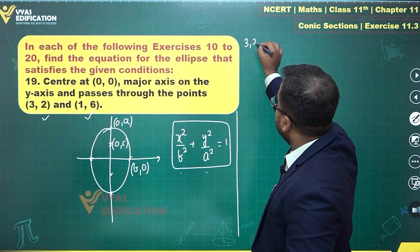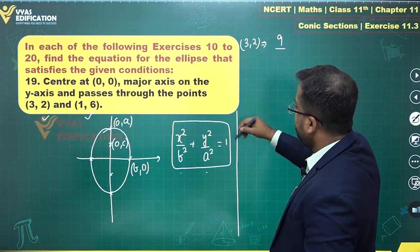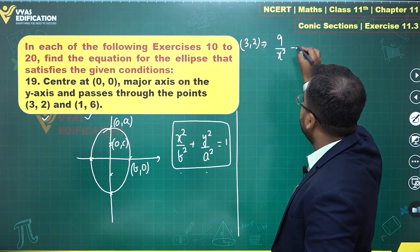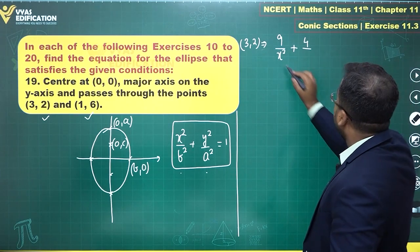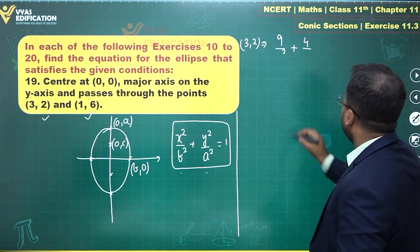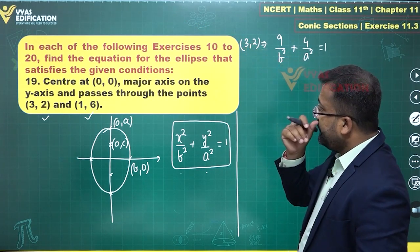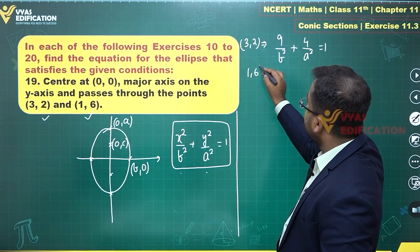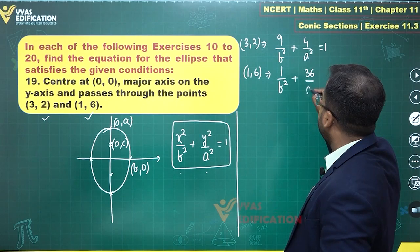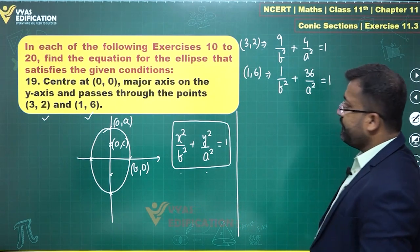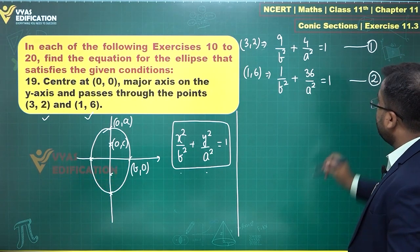If the ellipse passes through 3 comma 2, that implies 9 upon b² plus 4 upon a² equals 1. And if the ellipse passes through 1 comma 6, that implies 1 upon b² plus 36 upon a² equals 1. Let us call this equation 1 and this equation 2.